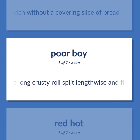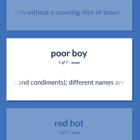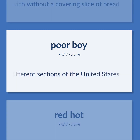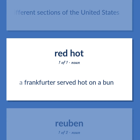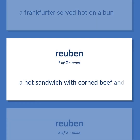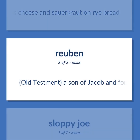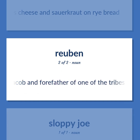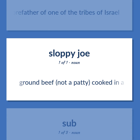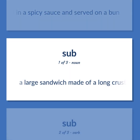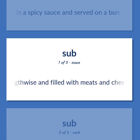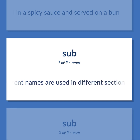Hoagie/sub: a large sandwich made of a long crusty roll split lengthwise and filled with meats and cheese, and tomato, onion, lettuce, and condiments. Hot dog: a Frankfurter served hot on a bun. Reuben: a hot sandwich with corned beef and Swiss cheese and sauerkraut on rye bread. Reuben: Old Testament, a son of Jacob and forefather of one of the tribes of Israel. Sloppy joe: ground beef, not a patty, cooked in a spicy sauce and served on a bun.